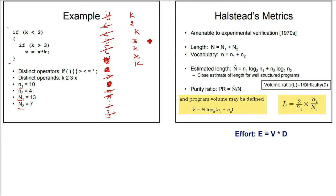Now the same thing for operands. k is repeating, this is repeating, x is repeating. 1, 2, 3, 4. Small n2 is 4. Now these values will be put into all the formulas, which contain only these notations.